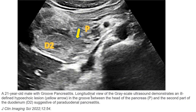This is what we can find on ultrasound of a 21-year-old man with groove pancreatitis. On the longitudinal grayscale ultrasound view, an ill-defined hypoechoic lesion — indicated by the yellow arrow — is seen in the groove between the head of the pancreas and the second portion of the duodenum, suggestive of groove pancreatitis.